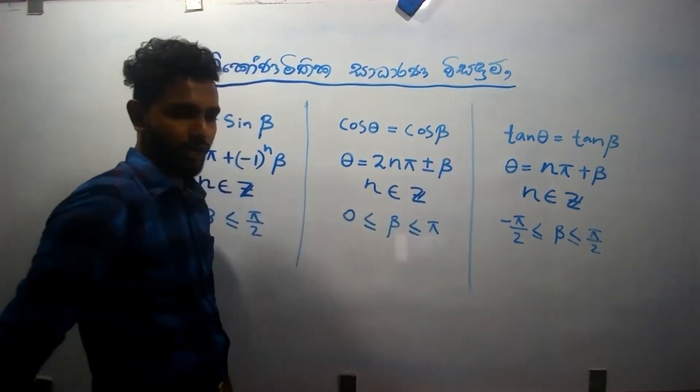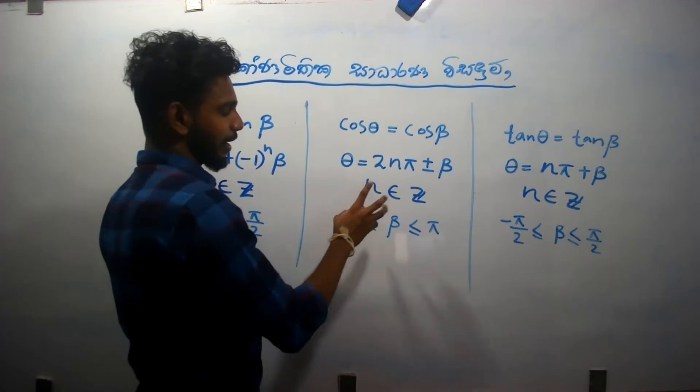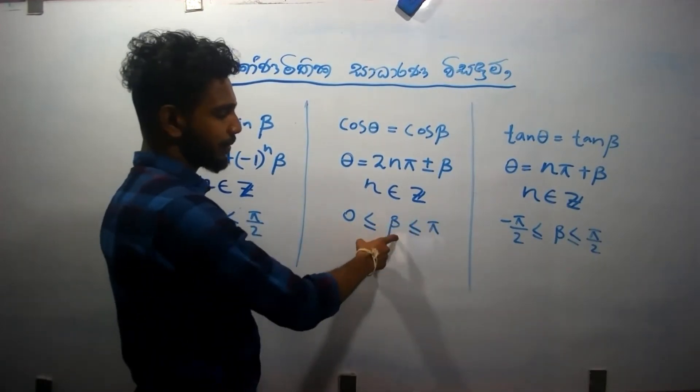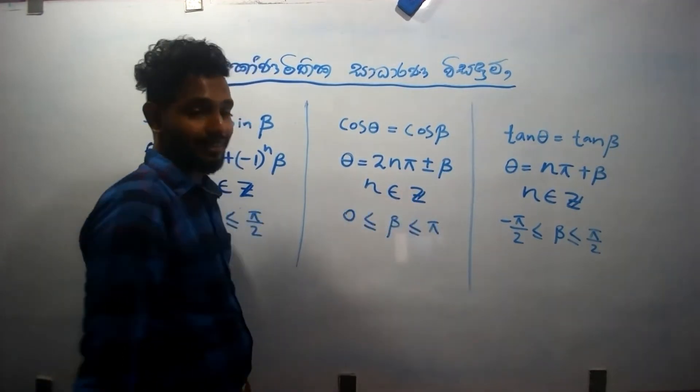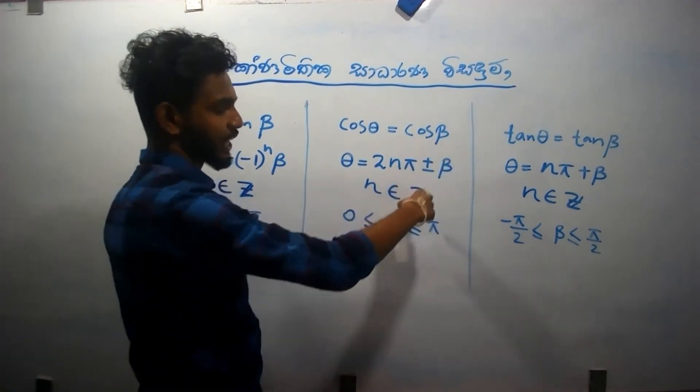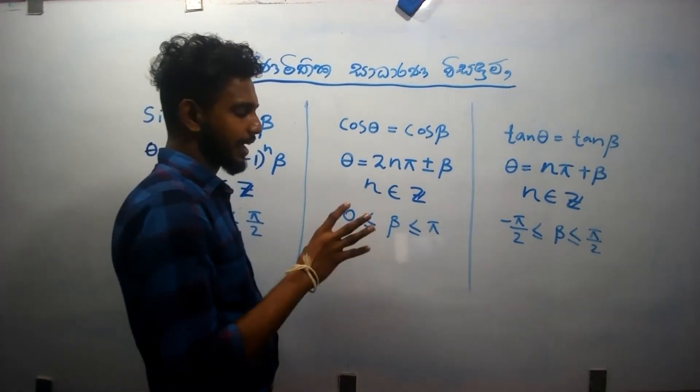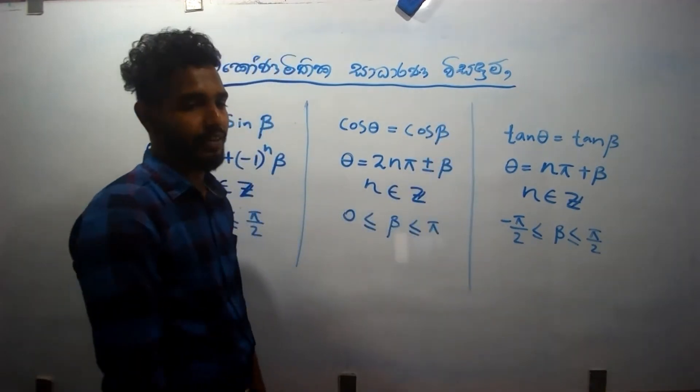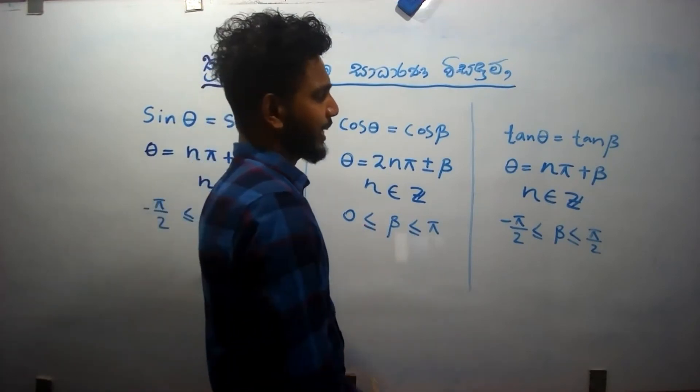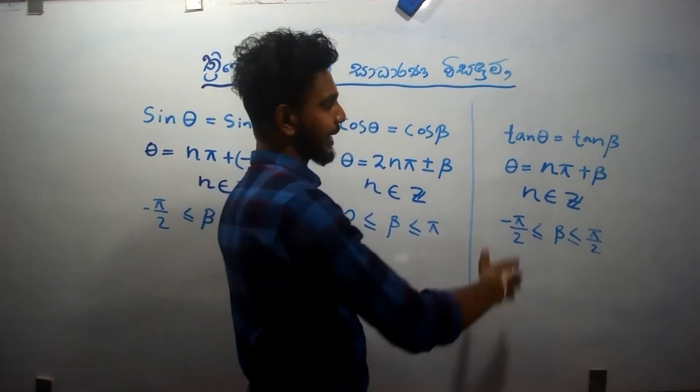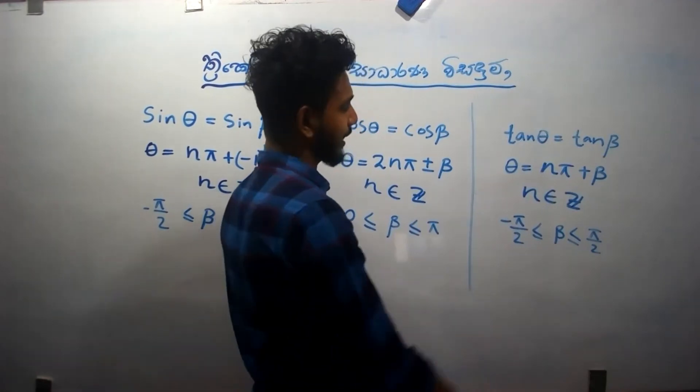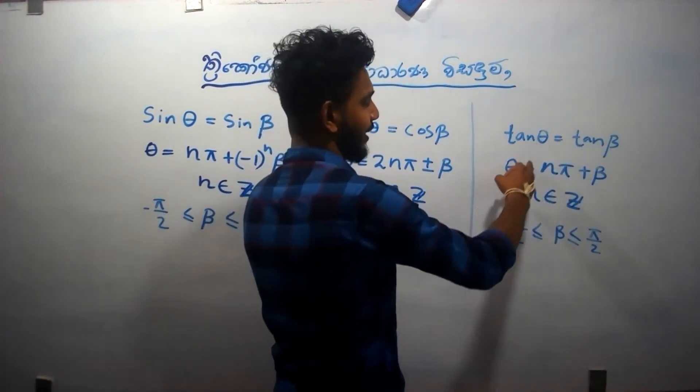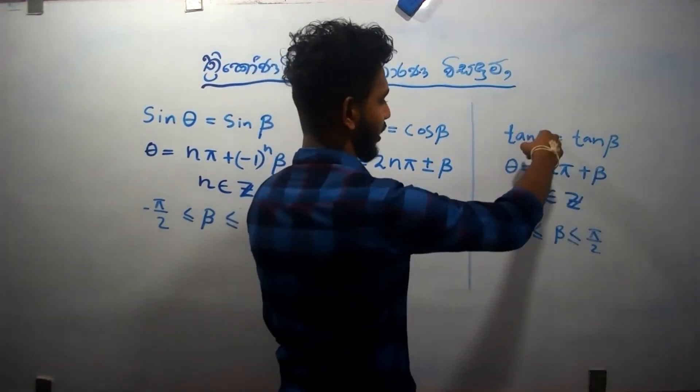The first thing to say is, when they say, if you need theta equals n pi plus beta or minus beta. Now for this, we will look at the same thing as tan. If you are using tan, we will use tan theta, tan beta. If you are using tan theta, tan beta, then you will use the same thing as theta equals n pi plus beta.